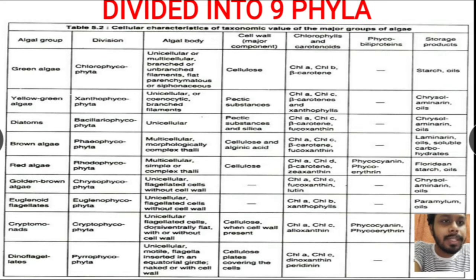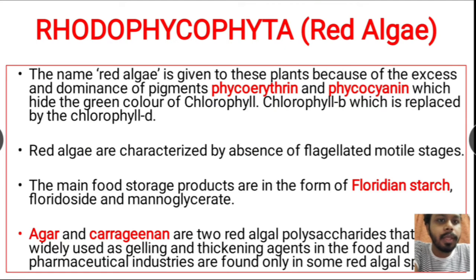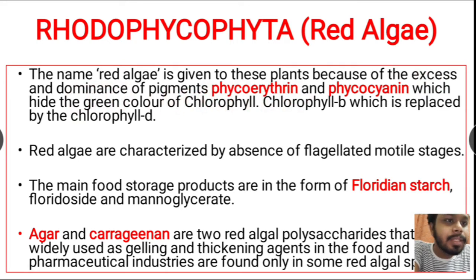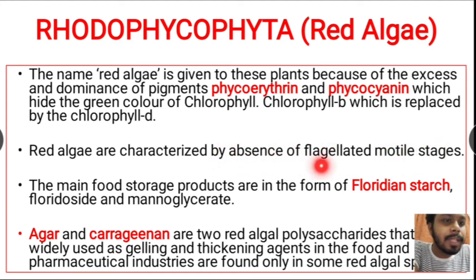Now we will discuss the most important phyla in detail. First is rhodophyta or red algae. The name 'red algae' is given because of the excess and dominance of the pigments phycoerythrin and phycocyanin, which give them their red color. Red algae are characterized by the absence of flagellated motile states — they are non-motile — and their main food storage product is floridian starch, a polysaccharide.